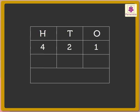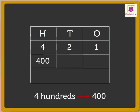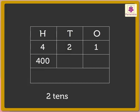Hence, the place value of digit 4 is four hundreds, which is equal to four hundred. The place value of digit 2 is two tens, which is equal to twenty. And the place value of digit 1 is one, which is equal to one.